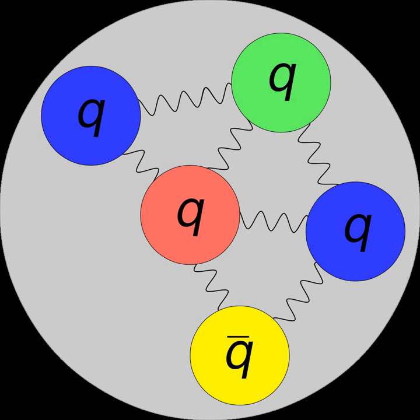In theory, there is no limit on the number of quarks in a hadron, as long as the hadron's color charge is white, or color neutral, consistent with ordinary hadrons.